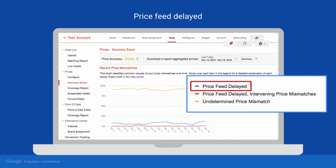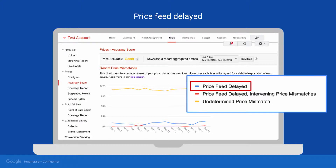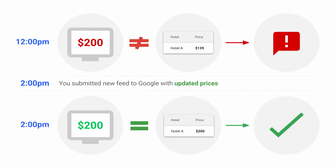We'll start with Price Feed Delayed. This error means that the price Google fetched from your website was different from the most recent price we received in your feed. Then, at a later time, we received an updated price in your feed that matched what we previously fetched. This implies a lag between the system that updates your site and the system that updates your prices with Google.